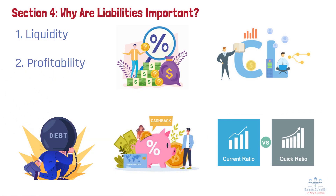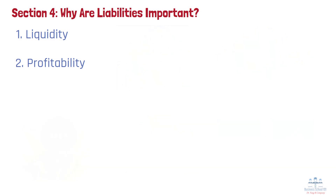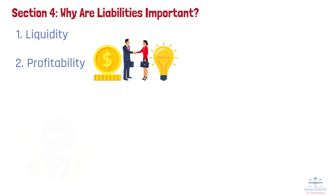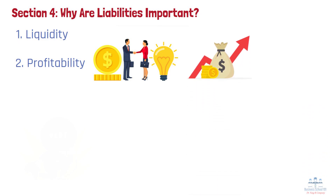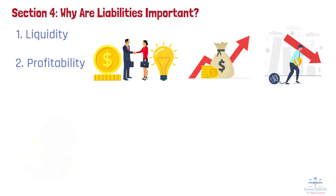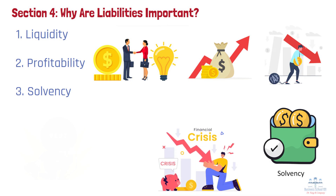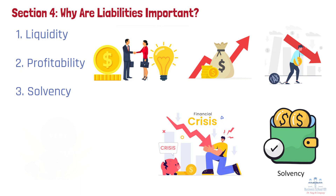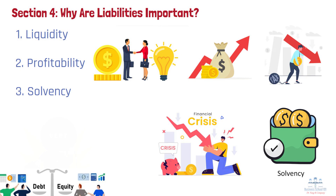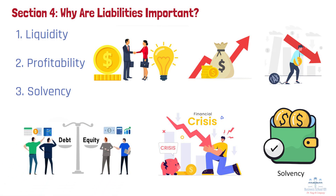Second, profitability: while liabilities help businesses finance expansion, they also come with interest costs. Companies must ensure that their debt is used effectively to generate profits. For instance, an airline company that finances new aircraft with loans expects to increase revenue through more flight capacity; however, if demand falls, the airline may struggle to repay the debt, affecting profitability. Third, solvency: solvency refers to a company's ability to meet long-term obligations. If a business has too much debt compared to its assets, it may risk bankruptcy. During the 2008 financial crisis, many companies with high debt-to-equity ratios collapsed because they could not meet their loan obligations. Businesses must balance debt financing with equity financing to ensure long-term sustainability.